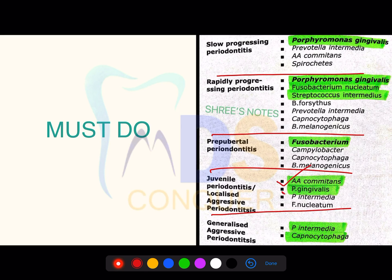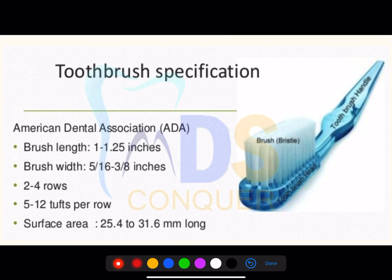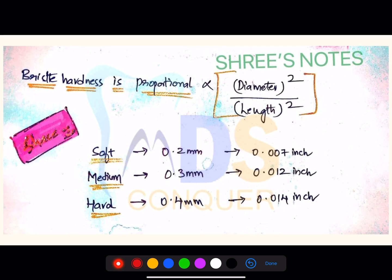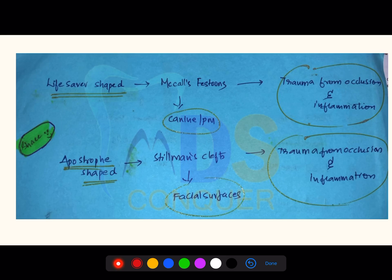For juvenile periodontitis, the first option organism is Actinobacillus actinomycetemcomitans (Aa) and the second is Porphyromonas gingivalis. Toothbrush specifications: ADA specification numbers are 1119 and 1120. Dimensions — length is 1 to 1.25 inches, width 5/16 to 3/8 inches, 2 to 4 rows, 5 to 12 tufts per row. Note the surface area as well.